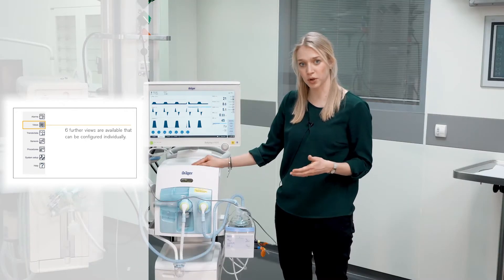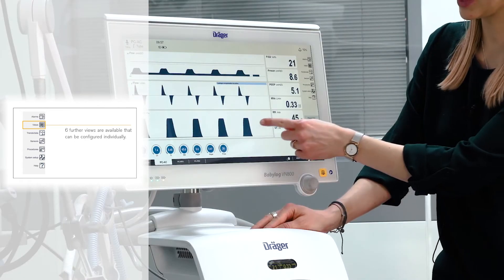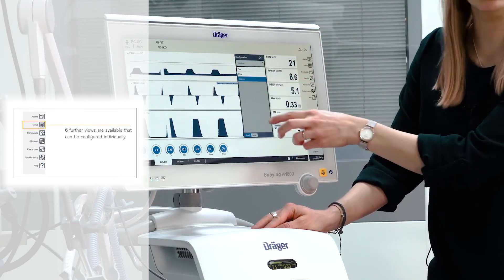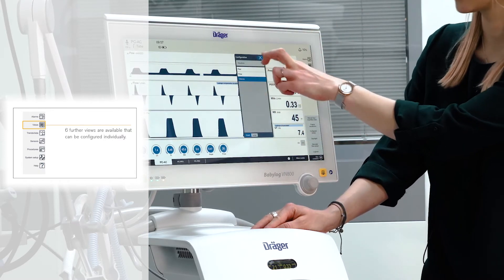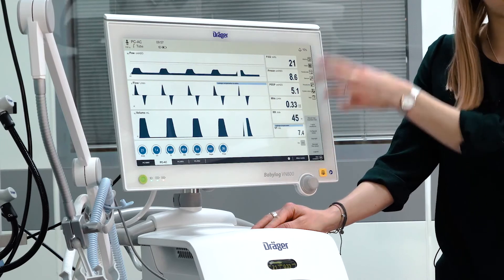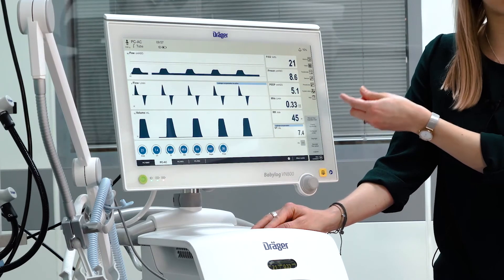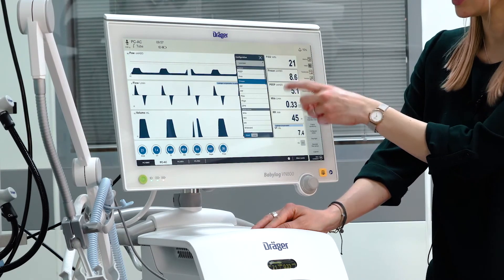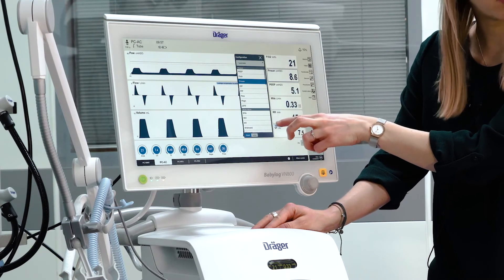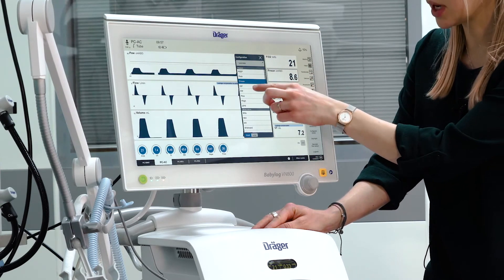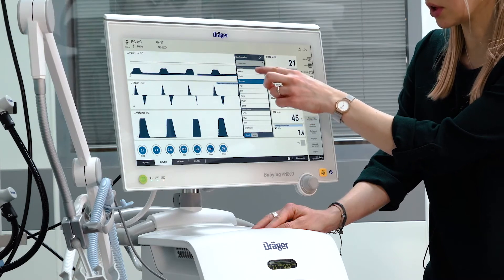To apply changes to the monitoring area, select the respective waveform and choose a different parameter from the list. If you want to apply changes to the measurements, in the same operating philosophy, select a parameter box, choose a different parameter from the list, and apply the changes by pressing the rotary knob.